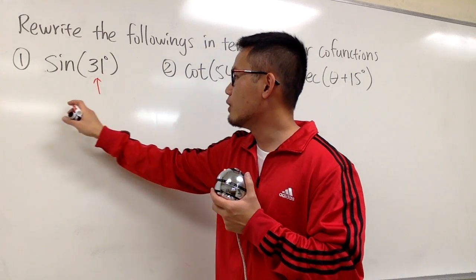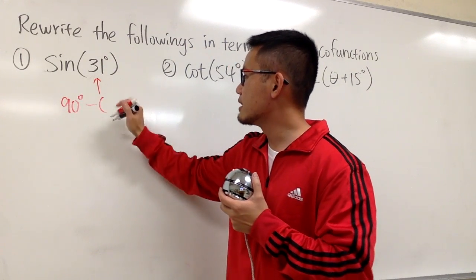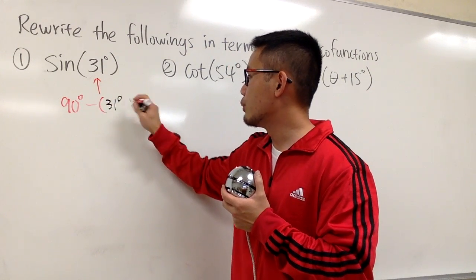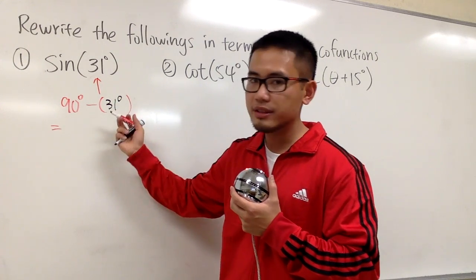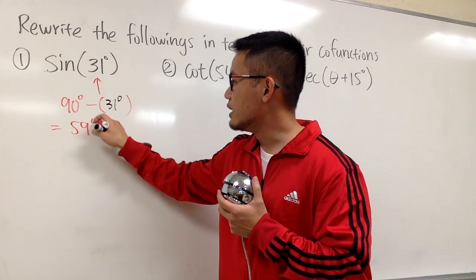We can just go ahead and look at this angle, and do 90 degrees, and then minus the 31 degrees that we already have. And you can just work this out. This will be 59 degrees.